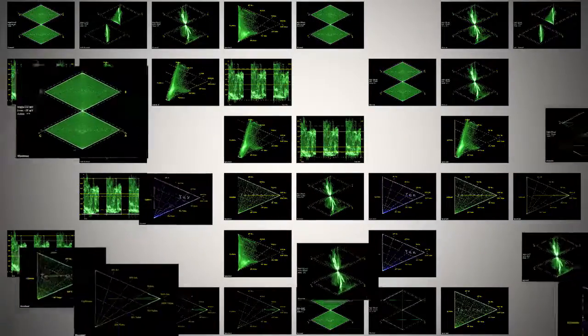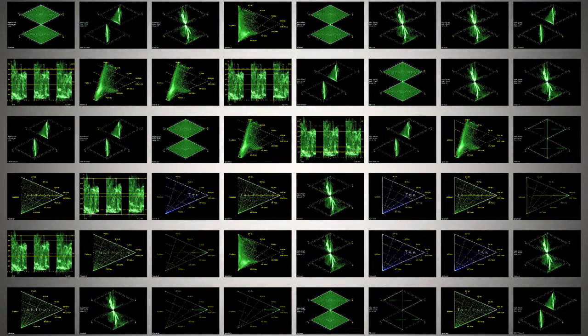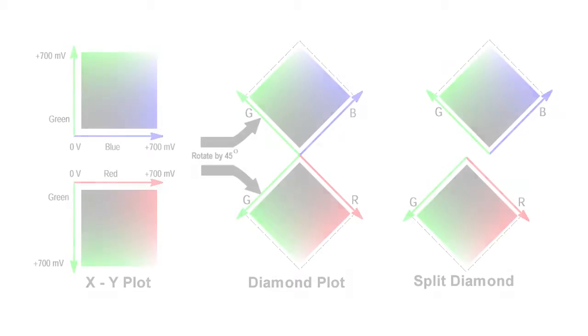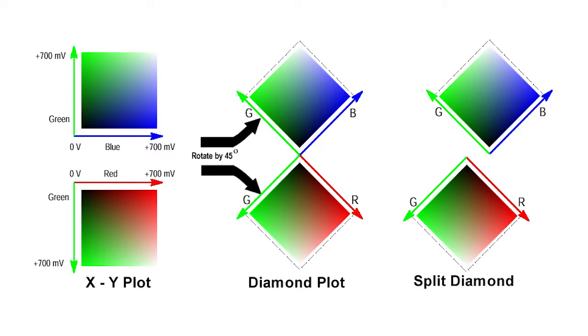When working in the RGB domain, Tektronix provides several displays to simplify adjustments of the red, green, and blue components. The diamond display presents the RGB color cube in a 2D representation with an XY plot of green versus blue in the upper diamond and green versus red in the lower diamond.